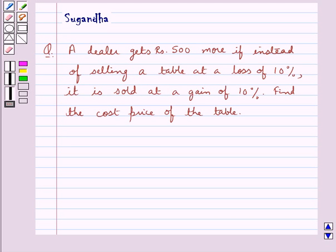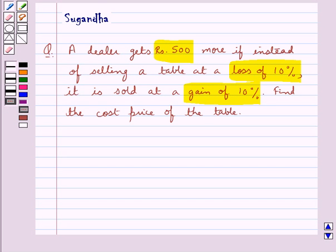Hello and welcome to the session. In this session we discuss the following question: A dealer gets rupees 500 more if instead of selling a table at a loss of 10%, it is sold at a gain of 10%. Find the cost price of the table. First let's recall the formula of the selling price.